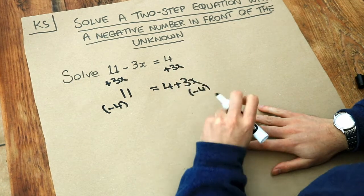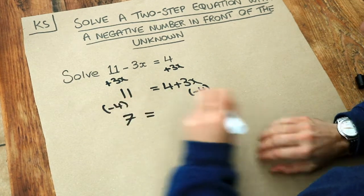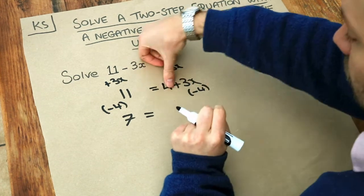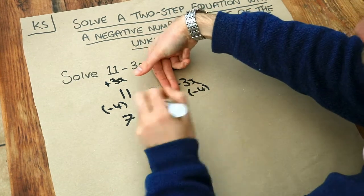then 11 minus 4 is 7. And if we minus 4 from this side, then we get rid of that plus 4 there, and we just get 3x.